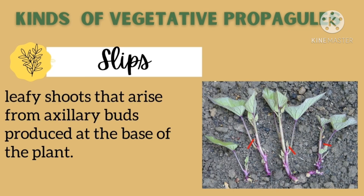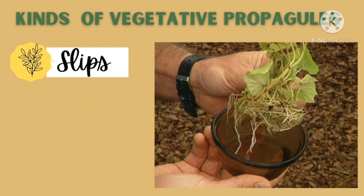Next is slips — these are leafy shoots that arise from axillary buds produced at the base of a plant. An example is sweet potato slips.